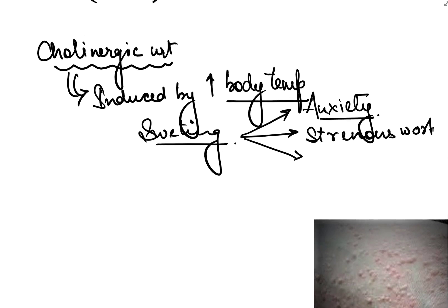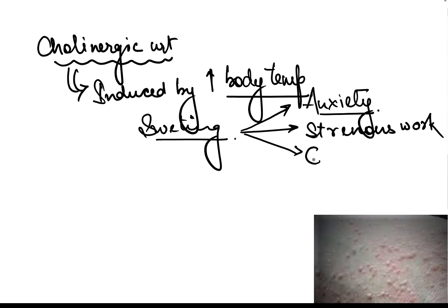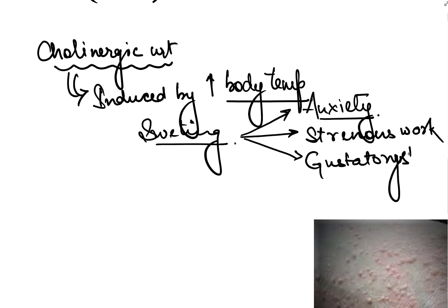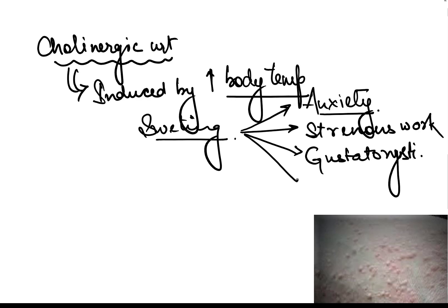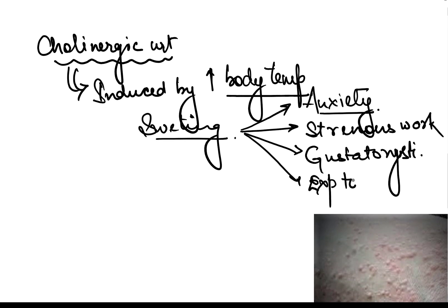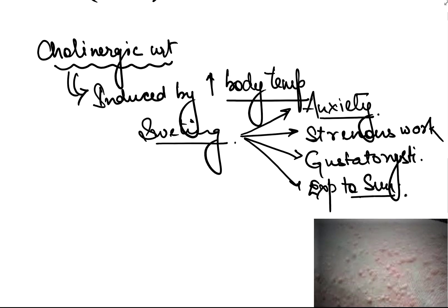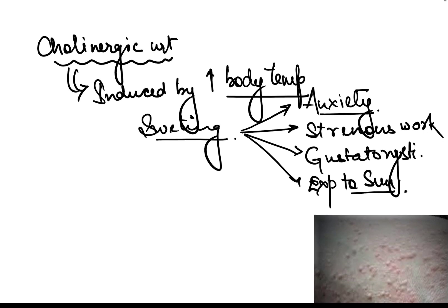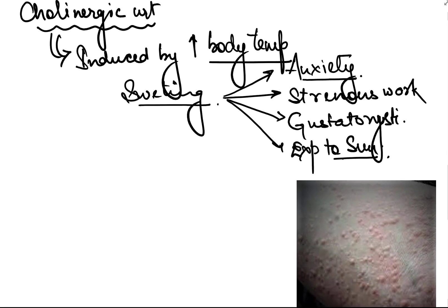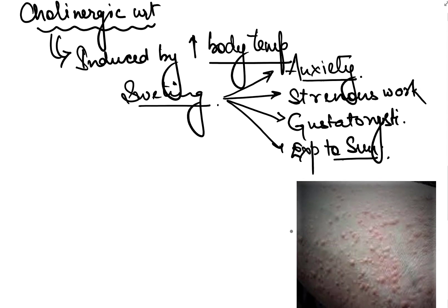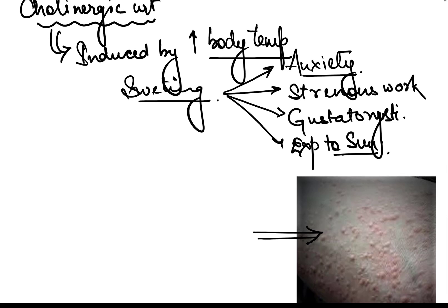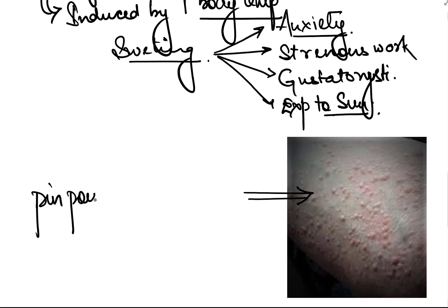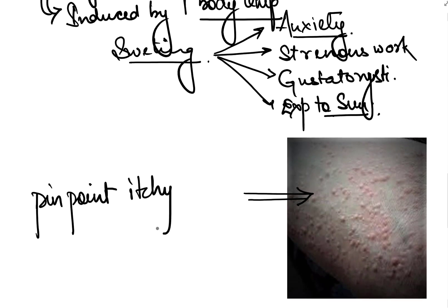Triggers include strenuous work, hard work, gustatory stimulus, or exposure to sunlight. Due to excessive exposure to sunlight, body temperature increases, sweating occurs, and cholinergic urticaria develops. The specific clinical feature of cholinergic urticaria is pinpoint itchy wheals, as you can see in this image.